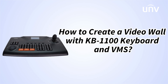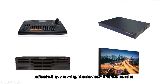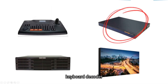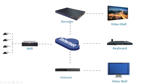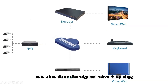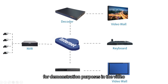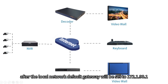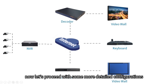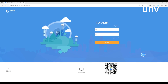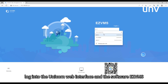In this episode we're going to introduce how we can create a video wall with a network keyboard and VMS. Let's start by showing the devices that are needed: keyboard, decoder, unicorn, and monitor for displaying. Here is the picture for a typical network topology. For demonstration purposes in the video, the local network default gateway will be set to 172.1.90.1.